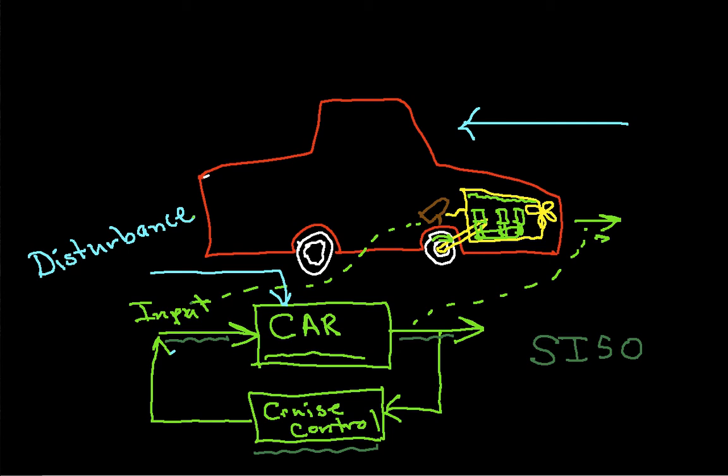So, there it is, an example of a system, the way we represent a complex mechanical object with a much simpler block diagram. And we're going to talk later on about how to characterize this block diagram so that we can make the car do what we want it to do.